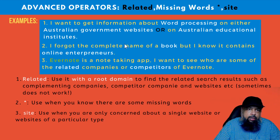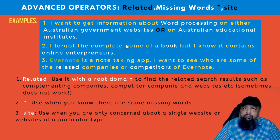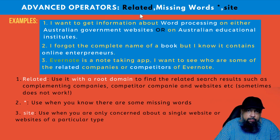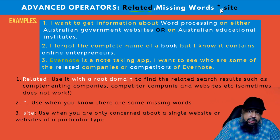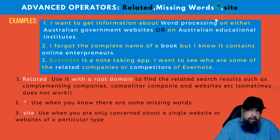In this video, we will learn how to use Google advanced search operators to quickly find the search results we need. We will be using three operators: the first one is called 'related', the second one is the asterisk sign, and the third one is 'site', which we have already discussed in another video.